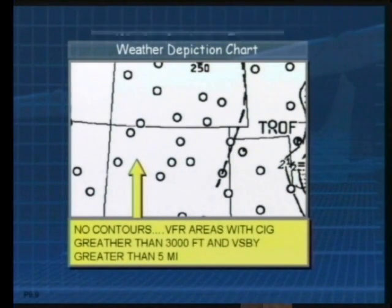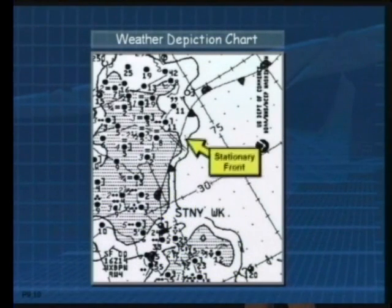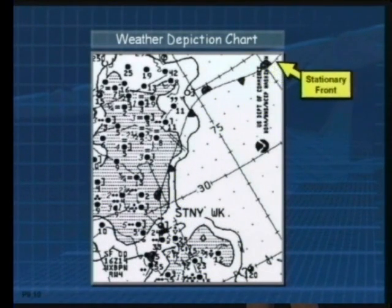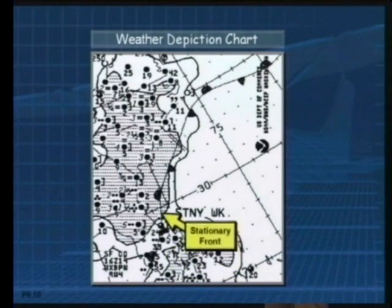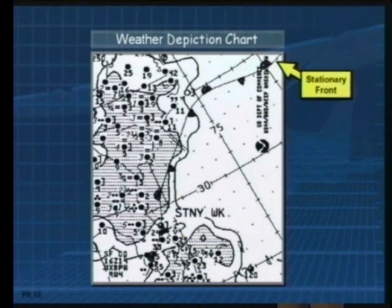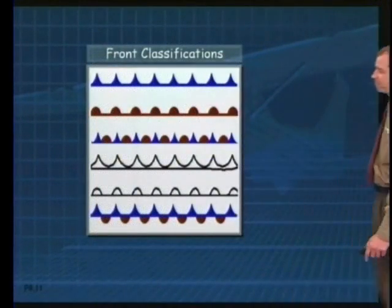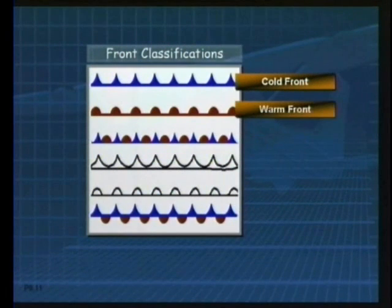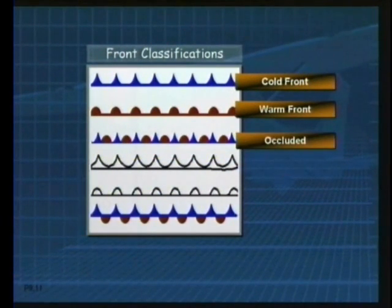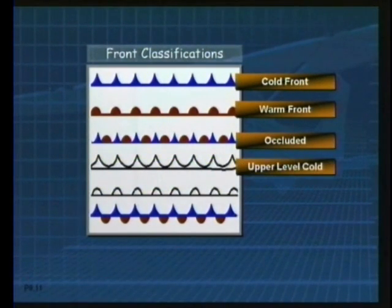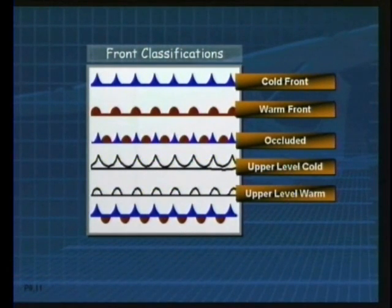Right along this line, the chart also shows where the fronts are located. In this case, we have a weak stationary front. Our frontal classifications one more time: there's the cold front, the warm front, the occluded front, and these two you may not have seen before — an upper level cold front, an upper level warm front, and a stationary front.